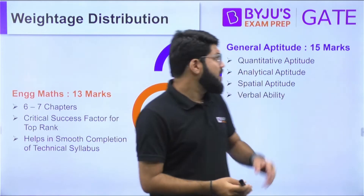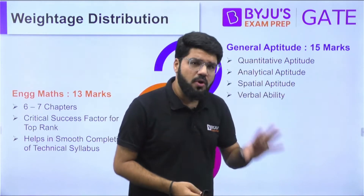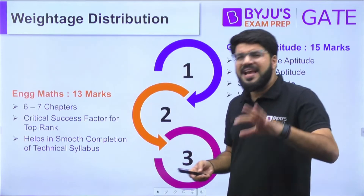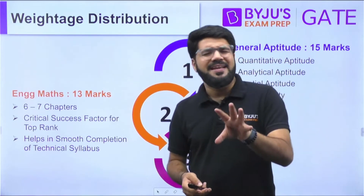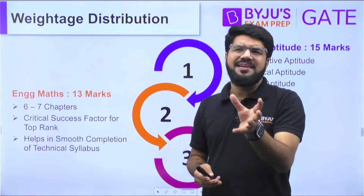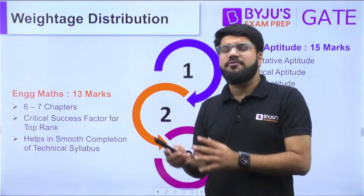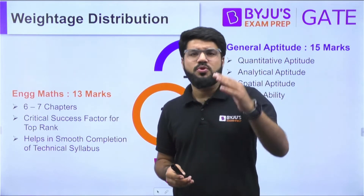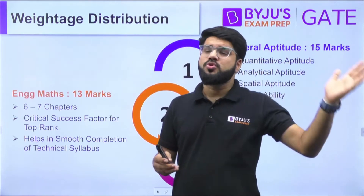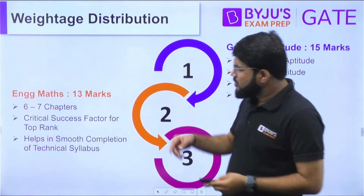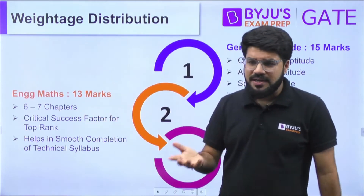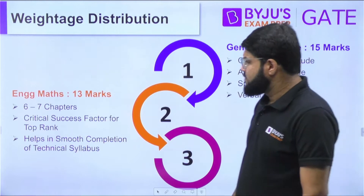One important point: General Aptitude syllabus is common to all branches, not specific to any branch. The next category is Engineering Mathematics. Its syllabus is 92 to 95 percent common for all branches — EC, EE, Mechanical, Civil — though it is slightly different for Computer Science, which has only common topics like algebra, calculus, and probability, with the rest going to discrete mathematics. Engineering Maths carries 13 marks total.